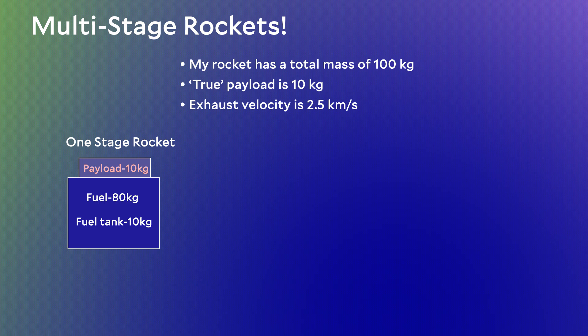My propellants — the fuel I need to launch — will be 80% of my total, or 80 kilograms. The remaining 10%, or 10 kilograms, is the fuel tank, the physical structure I need to hold the fuel. We can calculate delta V using the rocket equation: delta V equals 2.5 km/s times the natural logarithm of 100 over 20. 100 is the initial mass on the launch pad; 20 is the initial mass of 100 minus the 80 kilograms of fuel burned. My final mass consists of both the 10 kilograms of payload plus the 10 kilograms of empty fuel tank. If I calculate delta V, I get 4 kilometers per second for this one-stage rocket.